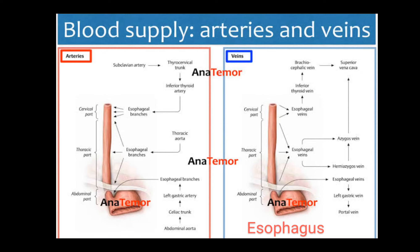In this video we'll be studying the blood supply of the esophagus. First we'll be studying the arterial supply. In the arterial supply, there are three parts of the esophagus: the cervical part, the thoracic part, and the abdominal part.